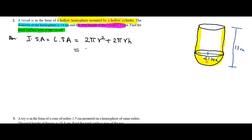He said that the diameter of the hemisphere is 14 cm. So if the diameter is 14 cm, the radius is half of that, which is 7 cm.